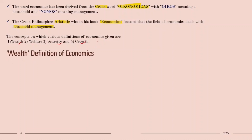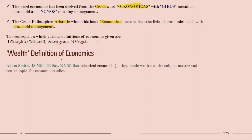The first is the wealth definition of economics. The wealth definition was given by classical economists like Adam Smith, J.S. Mill, J.B. Say, and F.A. Walker. They made wealth the subject matter and the center topic for economics.